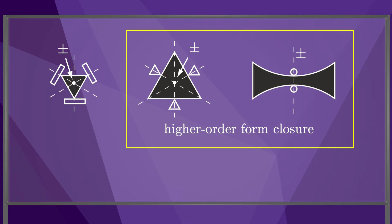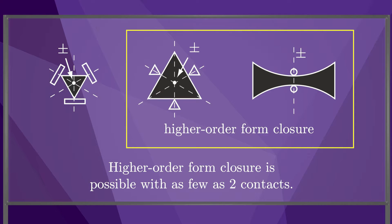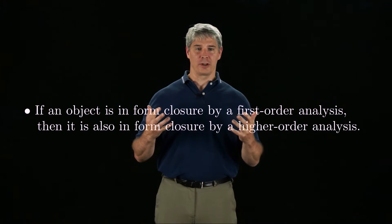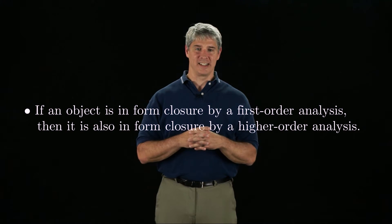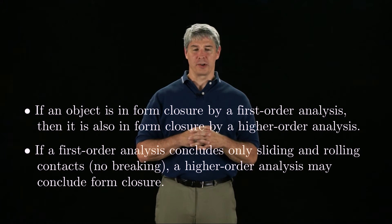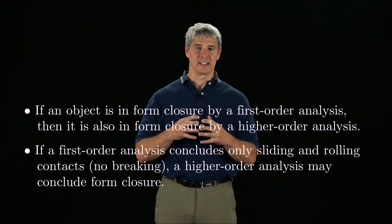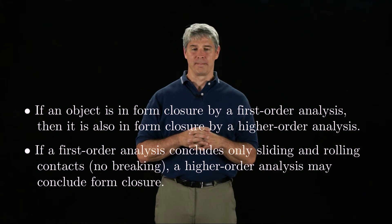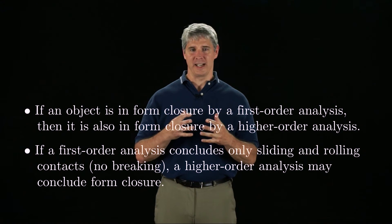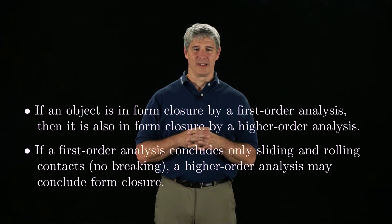By a higher-order analysis, form closure can sometimes be achieved with as few as two contacts. To summarize, if an object is in form closure by a first-order analysis, then it is also in form closure by a higher-order analysis. But if a first-order analysis concludes that only rolling or sliding is possible, then a higher-order analysis may conclude form closure. You can think of the first-order test as a conservative test for form closure. This ends our purely kinematic analysis of contact. In the next video, we will begin to study the forces that can be transmitted through contacts.